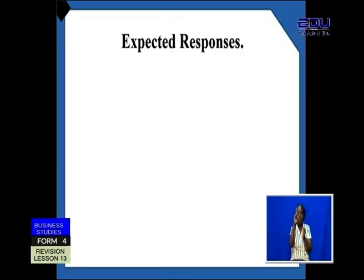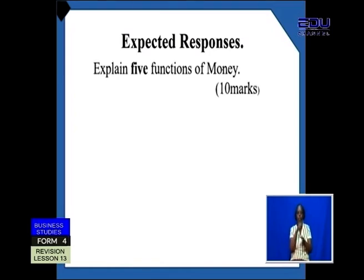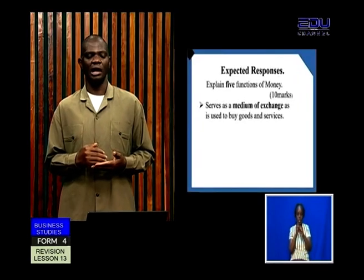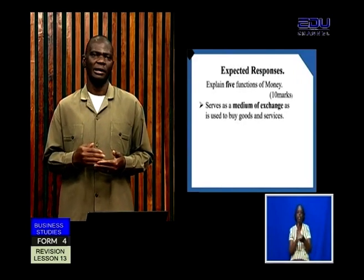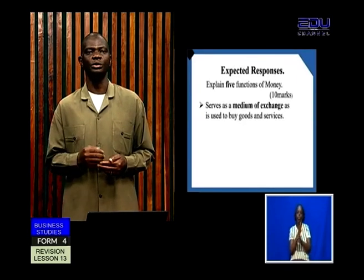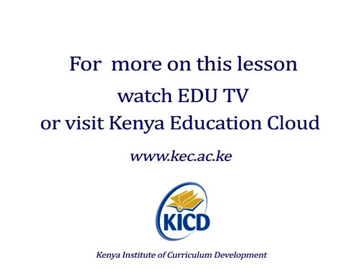So we can now see what is our expected response. The question is: explain five functions of money, at 10 marks. The first response is: serves as a medium of exchange. When you say medium of exchange, that function has come out. And once the function has come out, we add value. So what do we mean by medium of exchange? Money is used to buy goods and services.